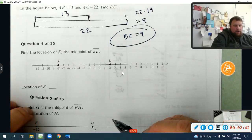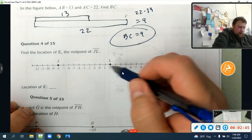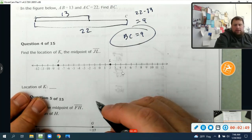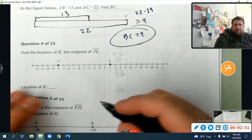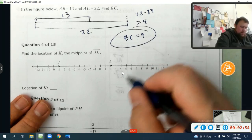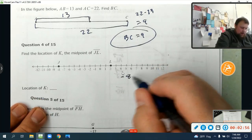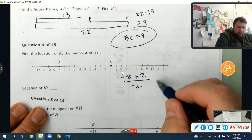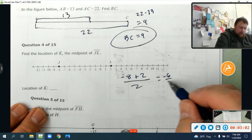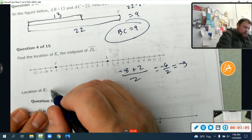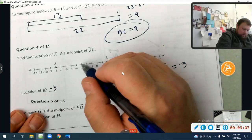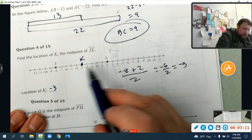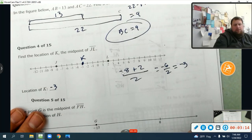Find the location of K, the midpoint of JL. Remember, to find the midpoint we just add the points together and divide by two. We're finding the average between the two numbers. So negative eight plus two divided by two. Well, negative eight plus two is negative six divided by two equals negative three. So the location of K is negative three. Let's test it - that's five from each point.